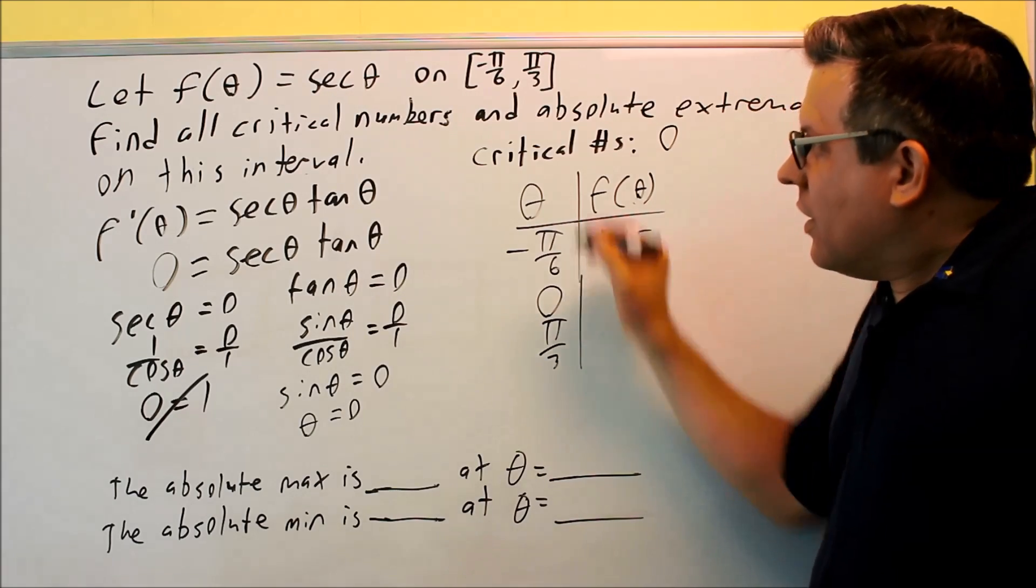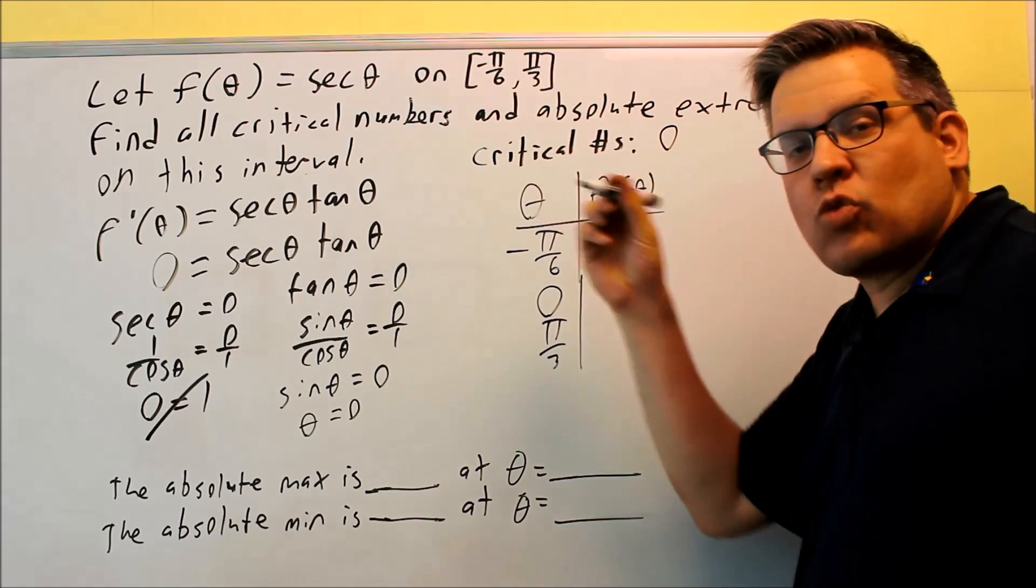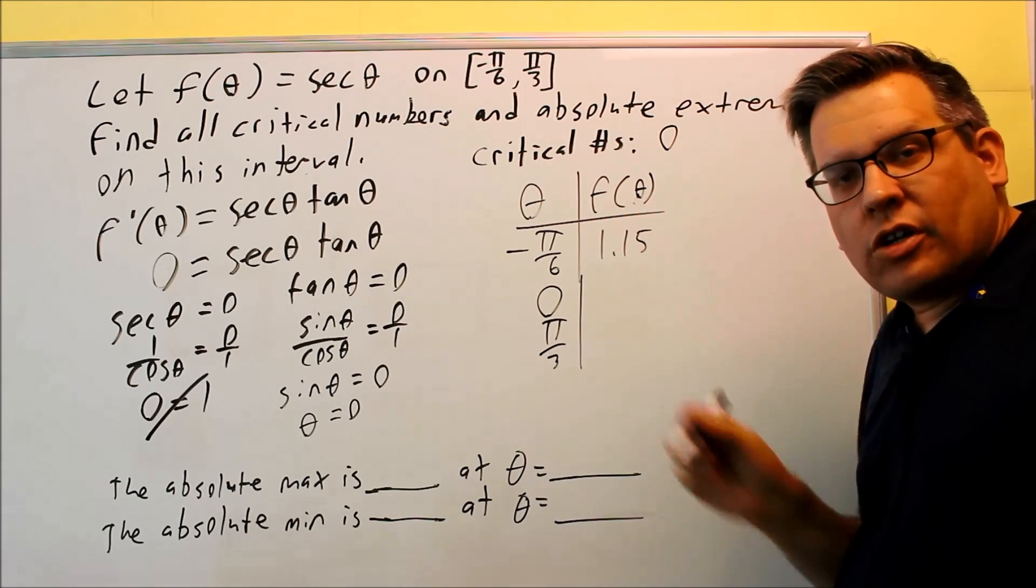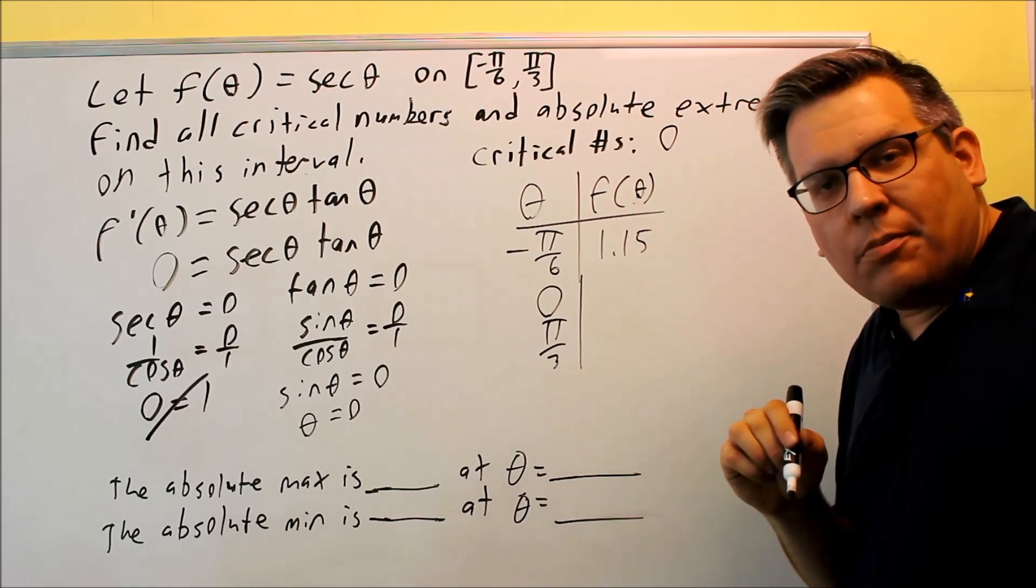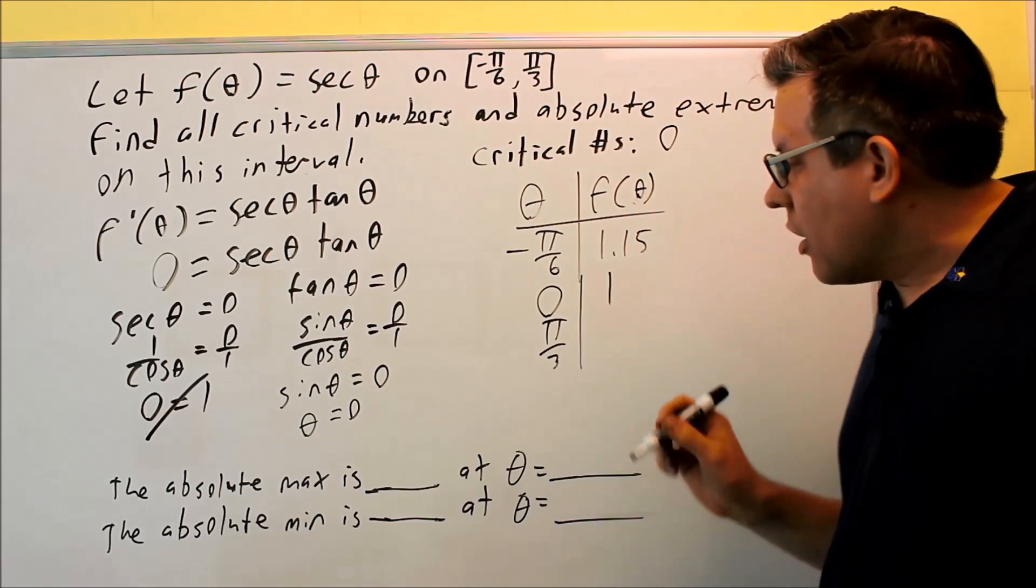Okay, the next one we're going to do is zero. We're going to do secant of zero. That's the same thing as one over cosine of zero, and cosine zero from your unit circle, that's equal to one. So you have one over one, which is one.